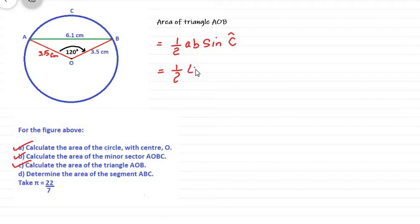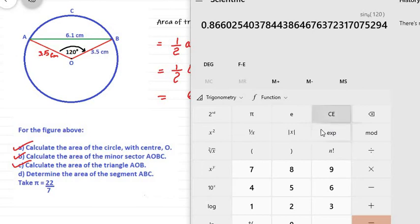So the two sides that trapped the angle, the known angle, are both the same length because they are both two radii of the circle. A is 3.5, B will also be 3.5, and sine of the angle in between these two radii is 120 degrees. Now, working this out, we will have half times 3.5 times 3.5, and that's going to give us 6.125. Multiplied by sine of 120.